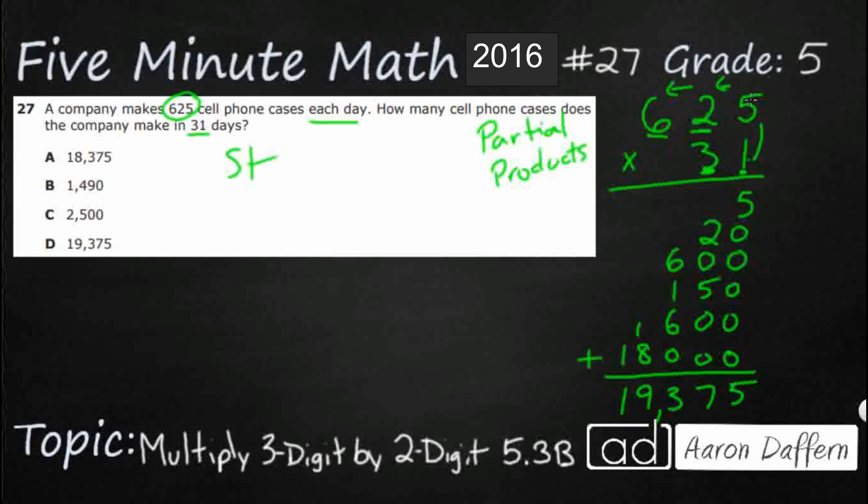How do we do it the standard algorithm? That's the normal way. Well, that's where we regroup if necessary. We do it in two rows.